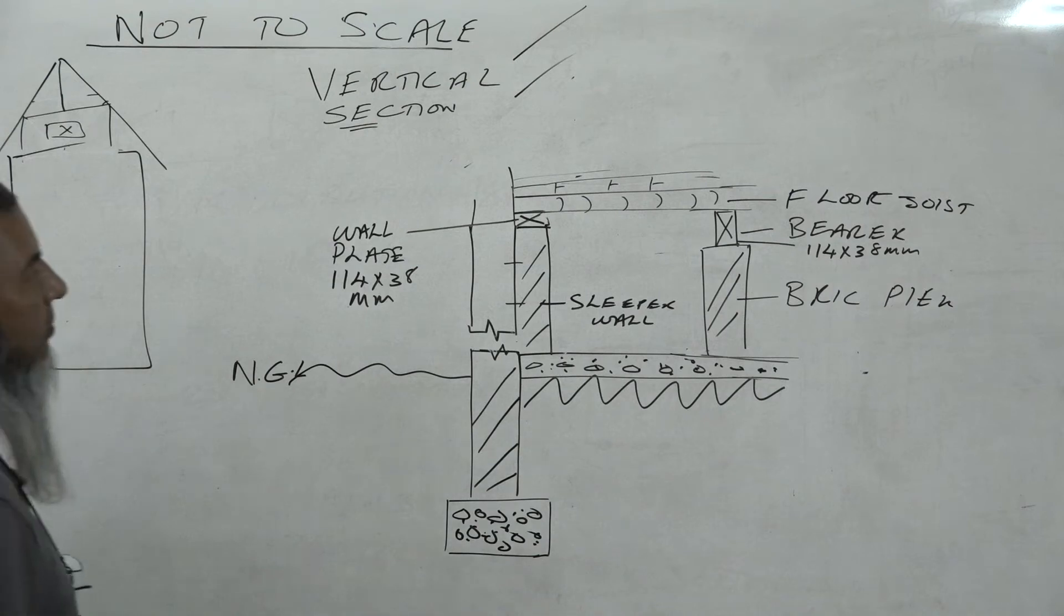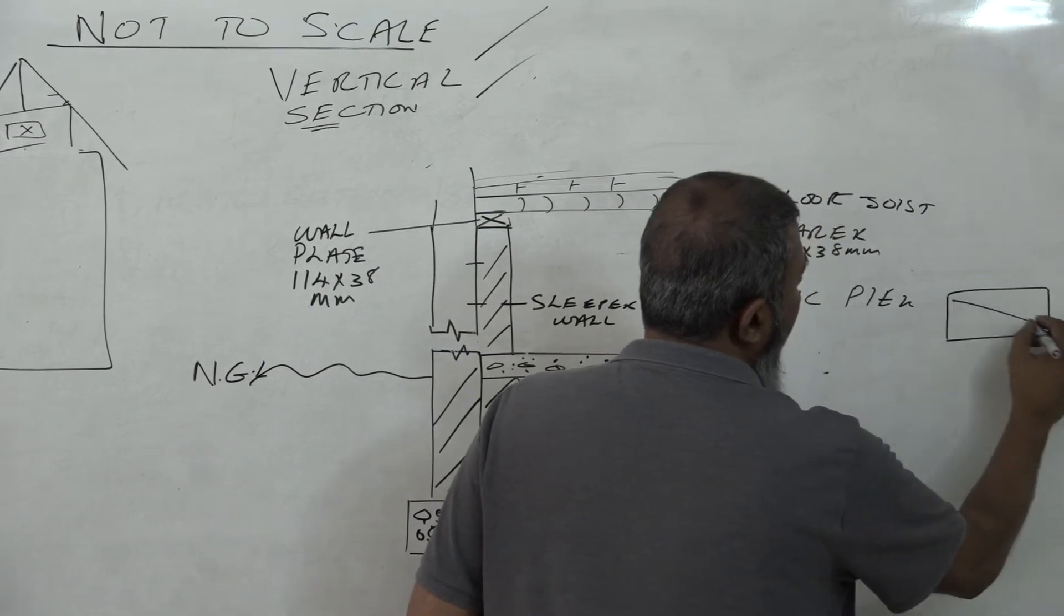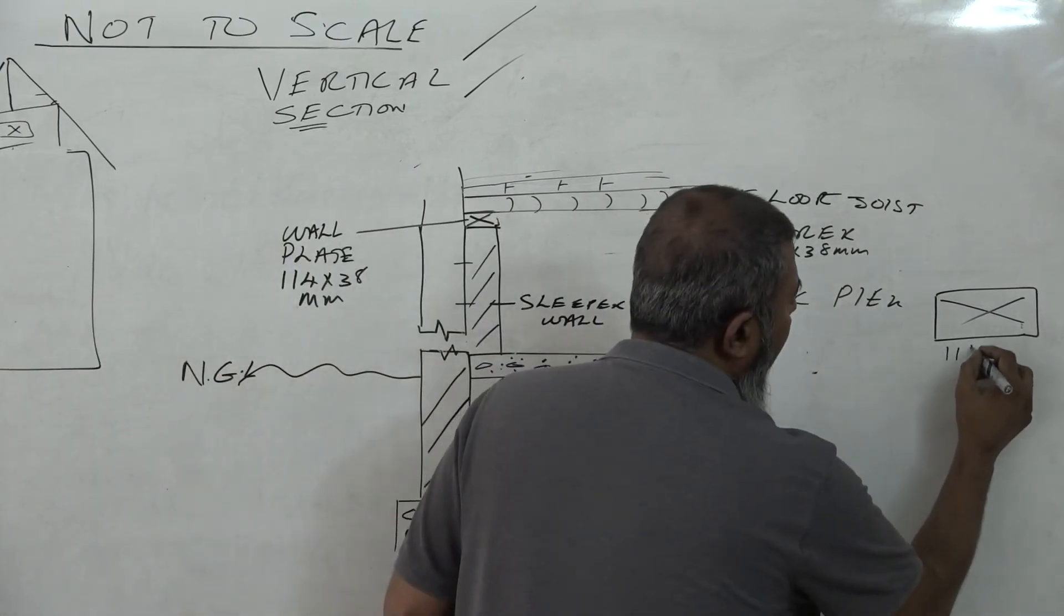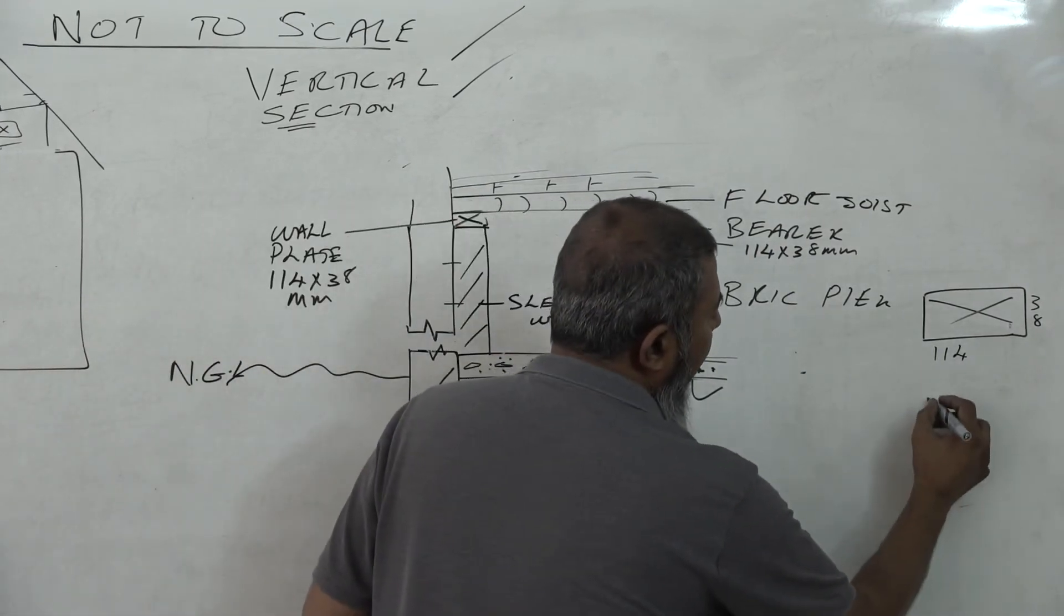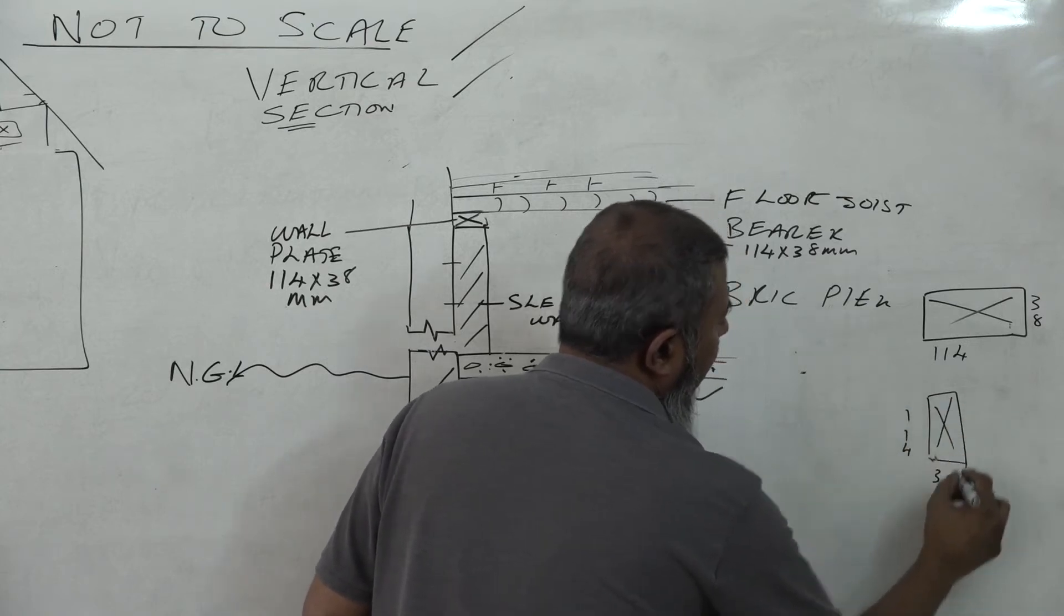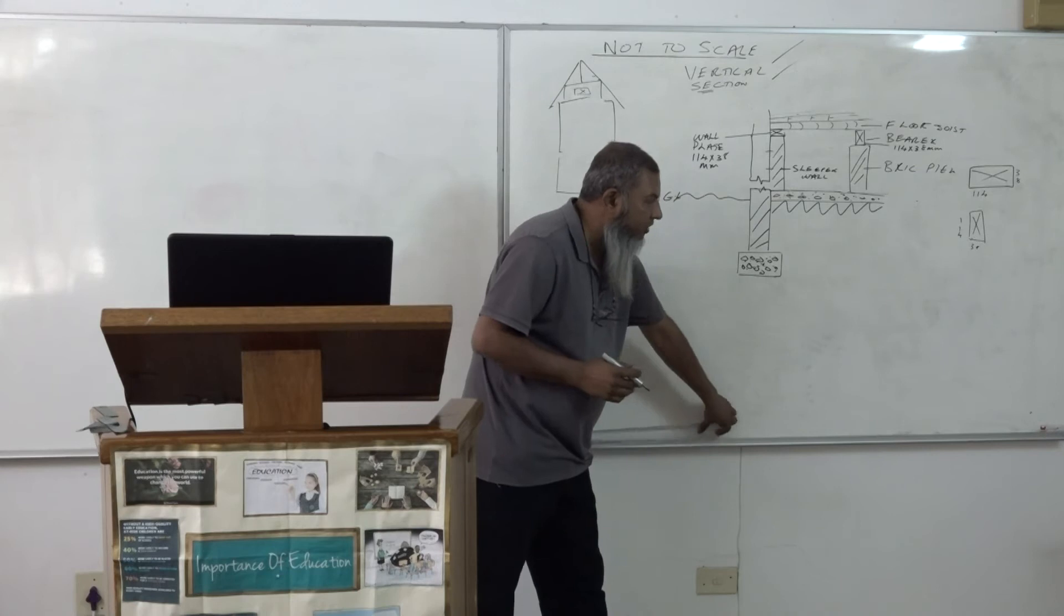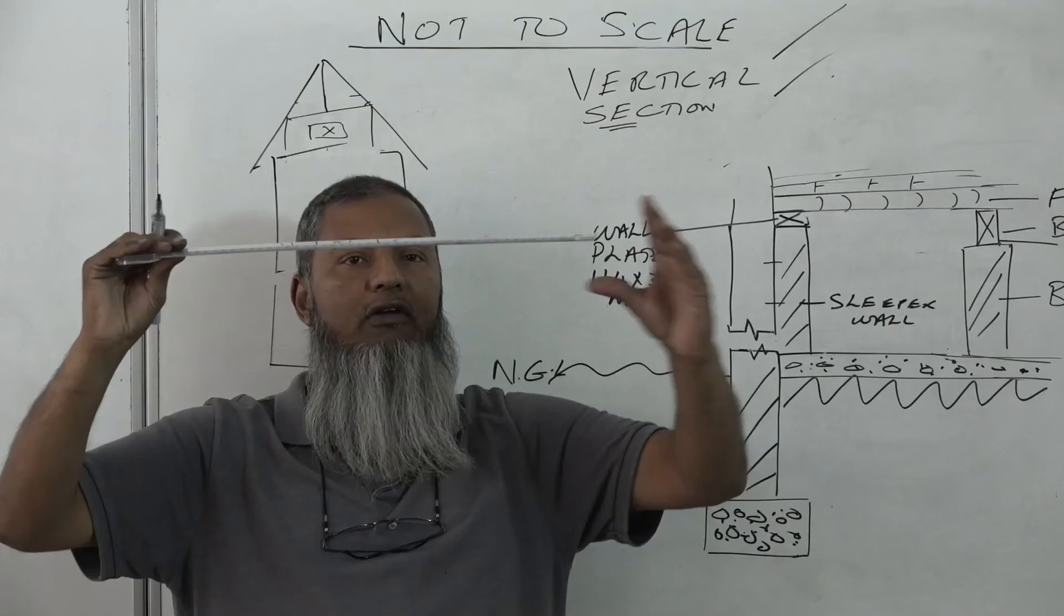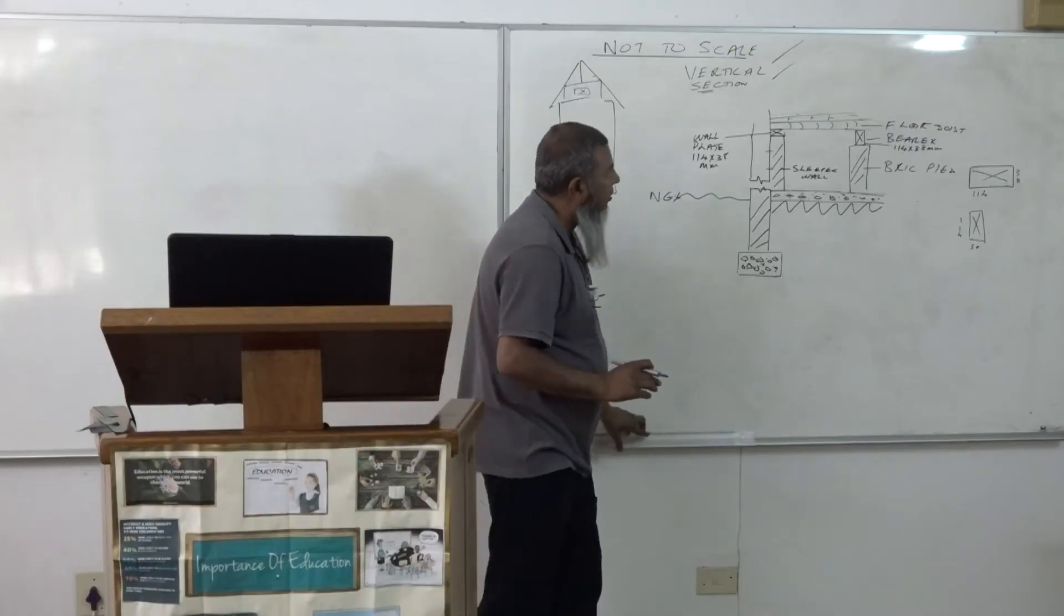My wall plate is normally 114 by 38 millimeters. My bearer, also 114 by 38 millimeters. So in other words, if I'm looking at a piece of timber, the first piece of timber is my wall plate. My wall plate goes horizontally. The 114 will go horizontally, that's the 38. If I'm using it as a bearer, I flip it over. The 114 now goes vertically. So this will support the piece of timber that's going across the room, from one end of the room to the other, to allow it not to flex and bend.